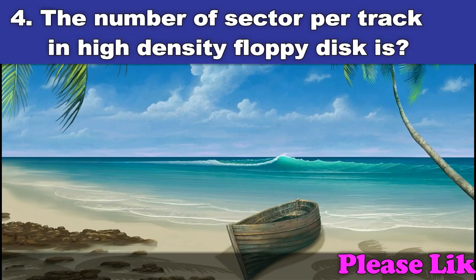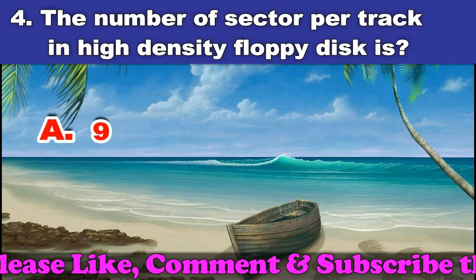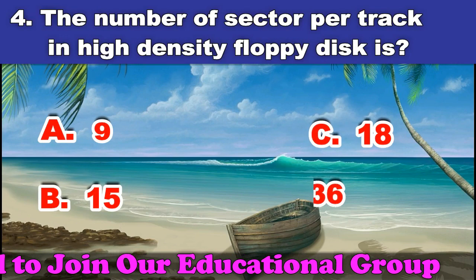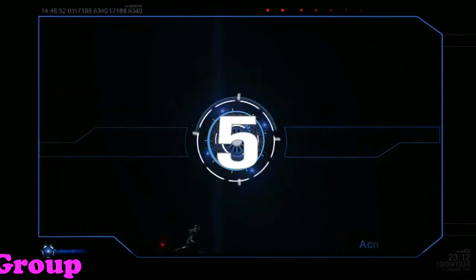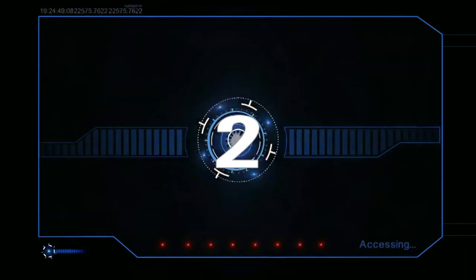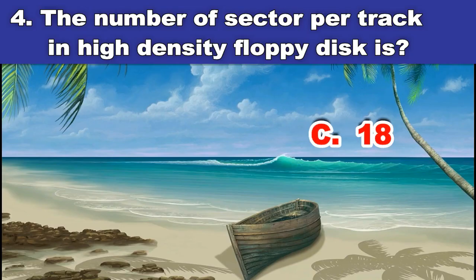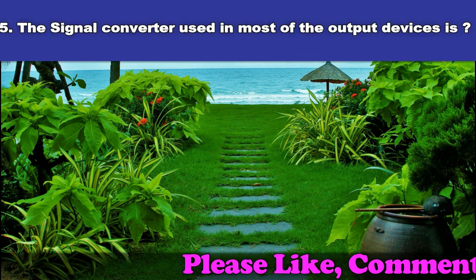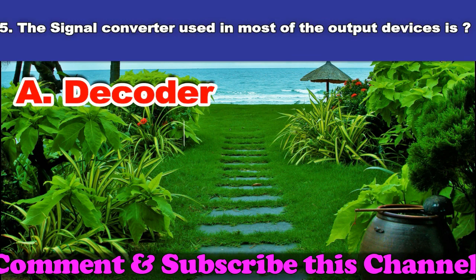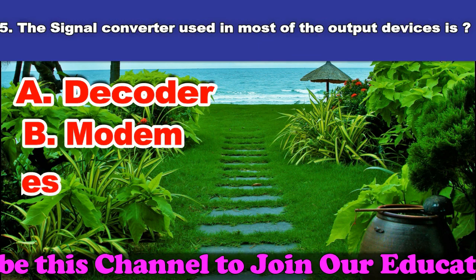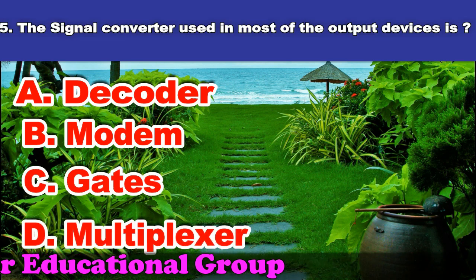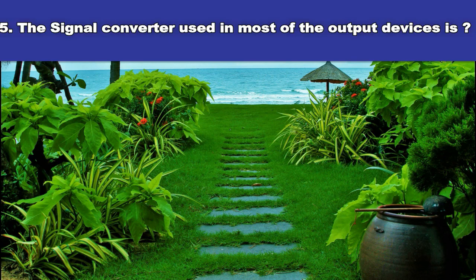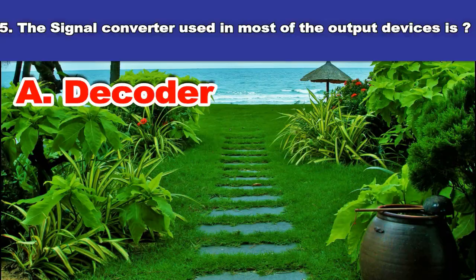Fifth question: A device used for decoding. A. Decoder. B. Modem. C. Gates. D. Multiplexer. And the answer is decoder.